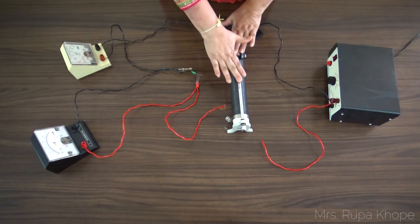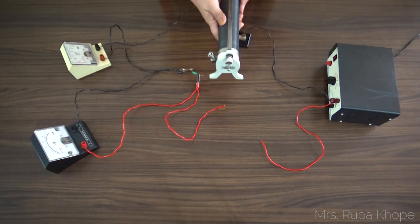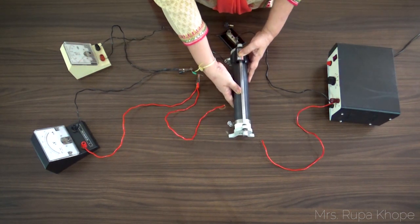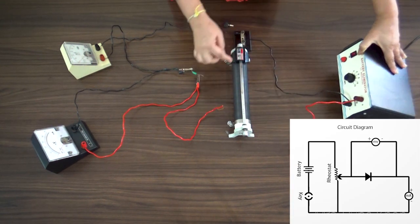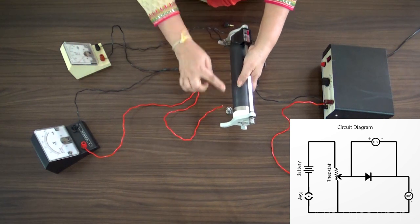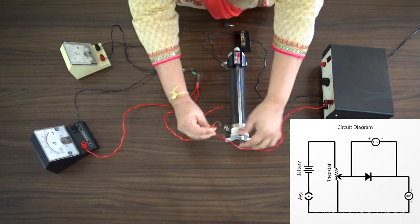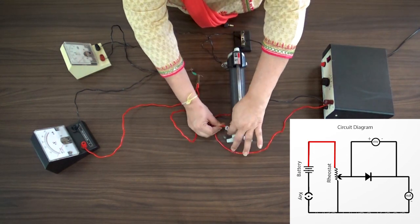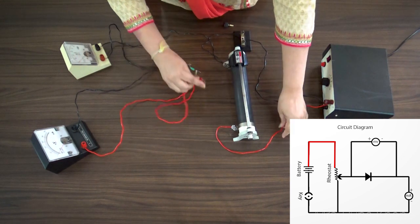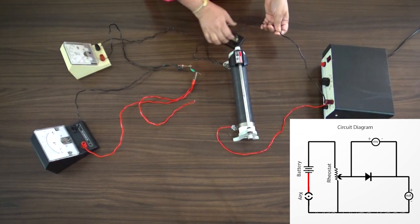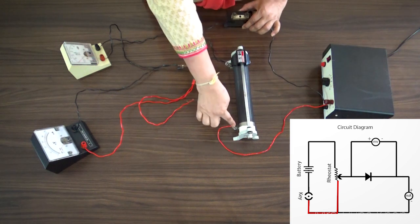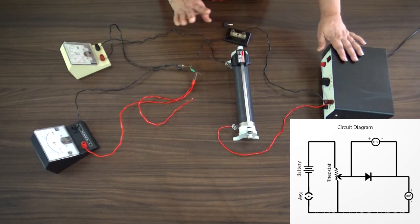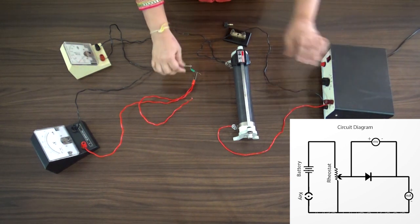In this experiment we are connecting the rheostat as a potential divider. This is our battery eliminator, set to two volts. The positive of the battery is connected to one end of the rheostat, and the negative goes through a key to the other end of the rheostat. So the rheostat is connected across the positive and negative of the eliminator.